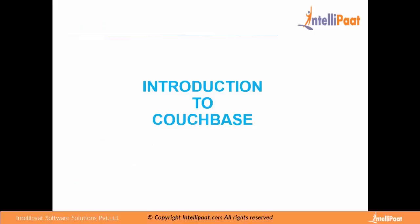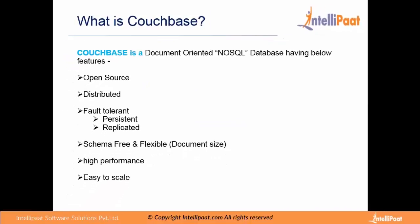Let us start with the introduction of Couchbase. Couchbase is a document-oriented NoSQL database which is open source and distributed — meaning we will have multiple machines where Couchbase services will run, and all these machines will form one single cluster. It is fault tolerant, meaning we will not lose our data in any case.